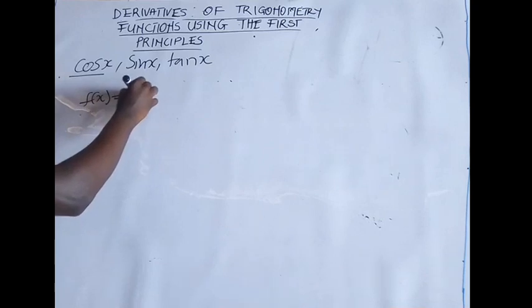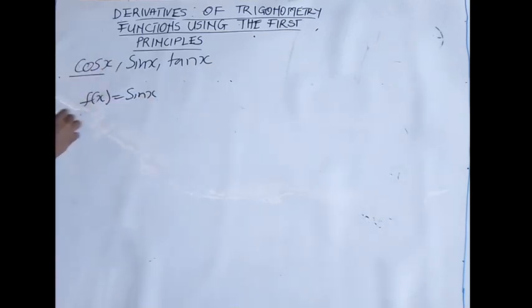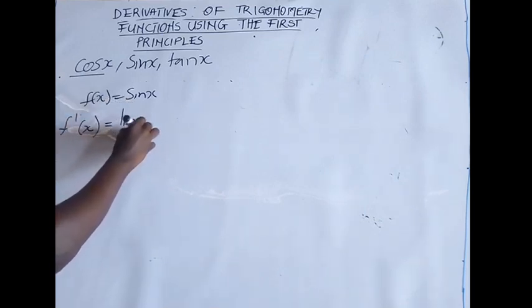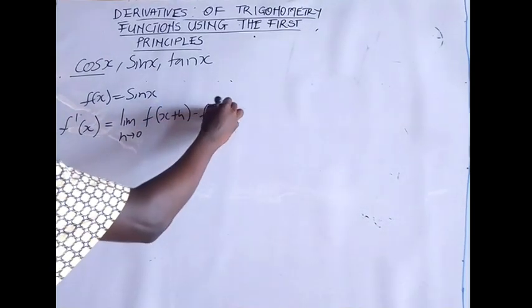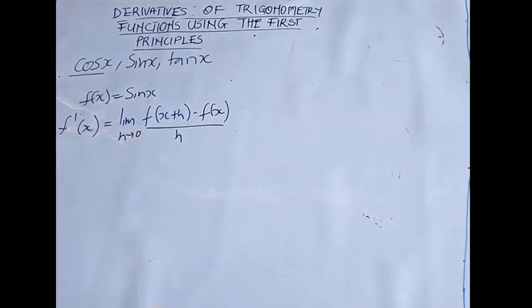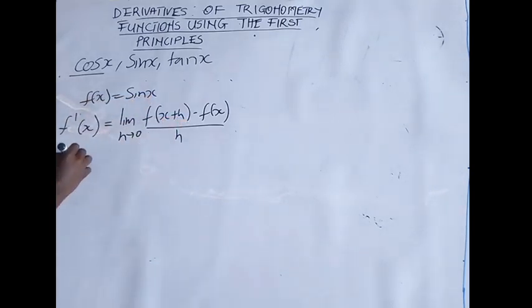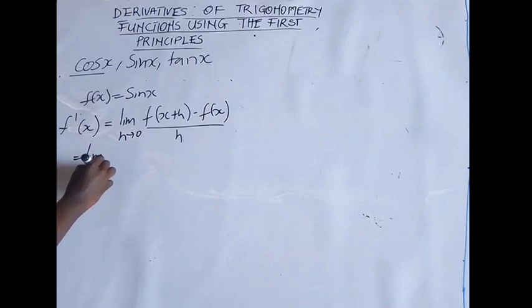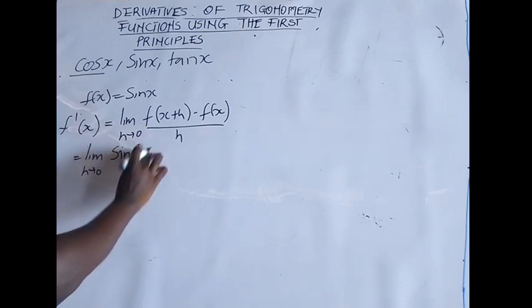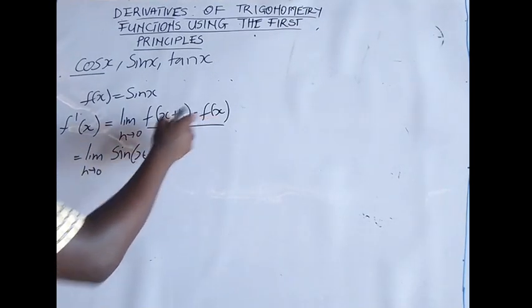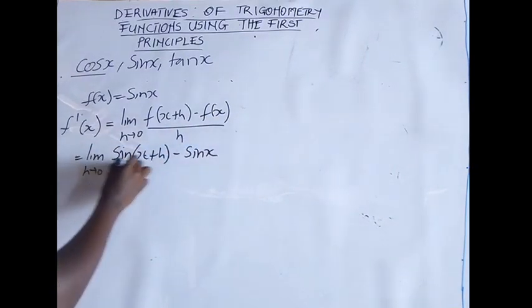Now let's differentiate sin(x) from first principles. So f(x) = sin(x), and the first principle states that the derivative equals the limit as h approaches zero of f(x+h) minus f(x) all over h. Replacing x with x+h gives the limit as h→0 of sin(x+h) minus sin(x), all over h.